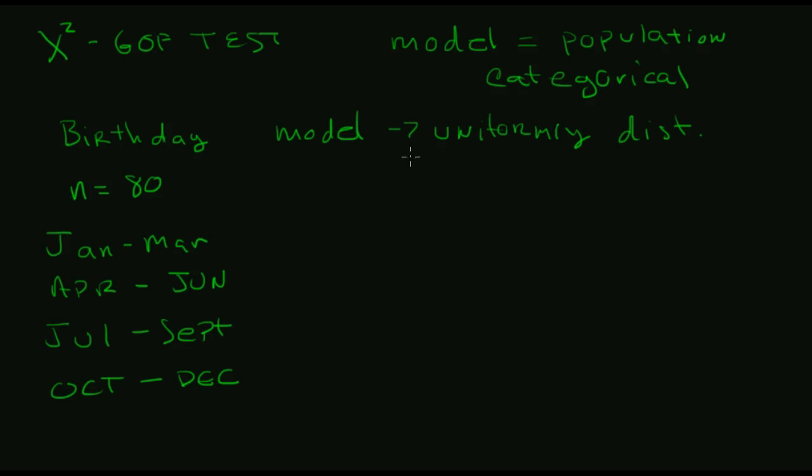So in order to be able to draw inferencing here, we have to have three criteria. We have to assume randomness, so we're going to assume that this is a simple random sample. We have to have a 10% criteria, so we're going to assume that my population is larger than 800 here. We also have a large counts criteria.